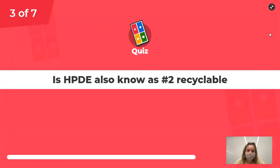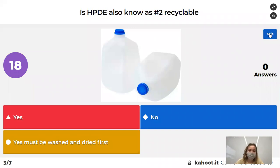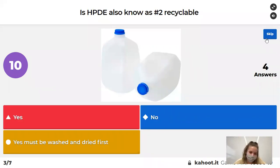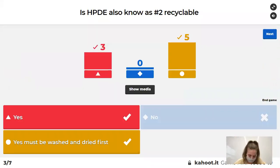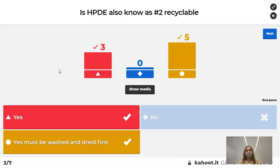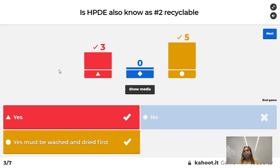There are two right answers on this one. Is a milk jug recyclable? Yes — you should rinse it out and dry it before you recycle it. So it should be 'yes' or 'yes, must be washed and dried first' — both are correct.